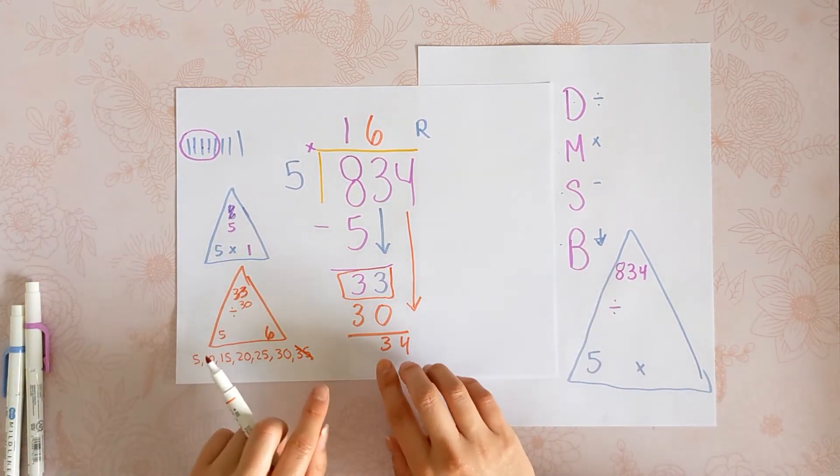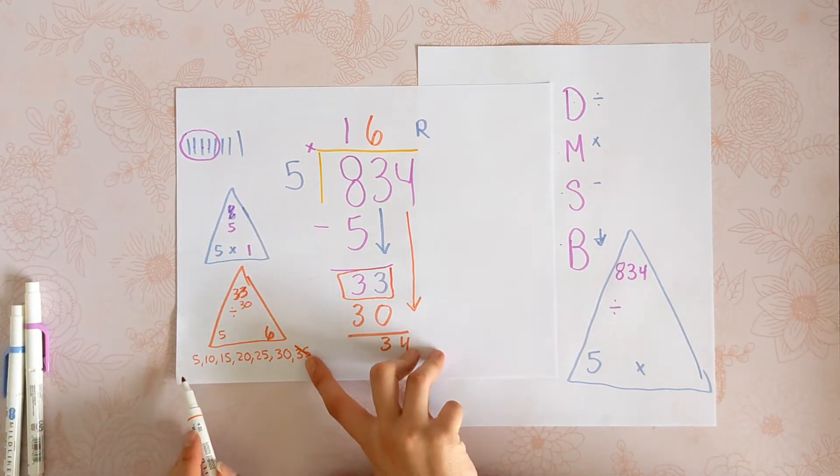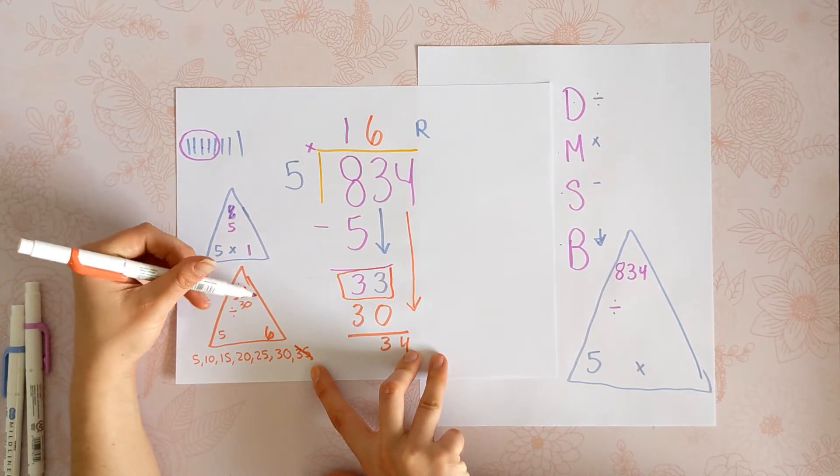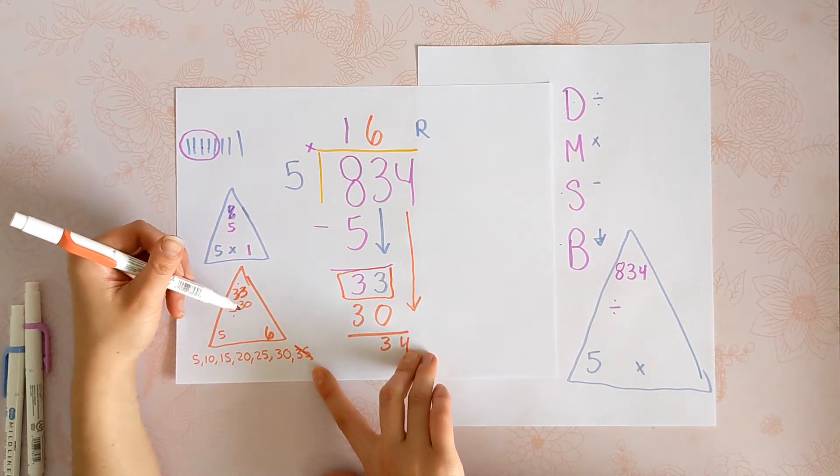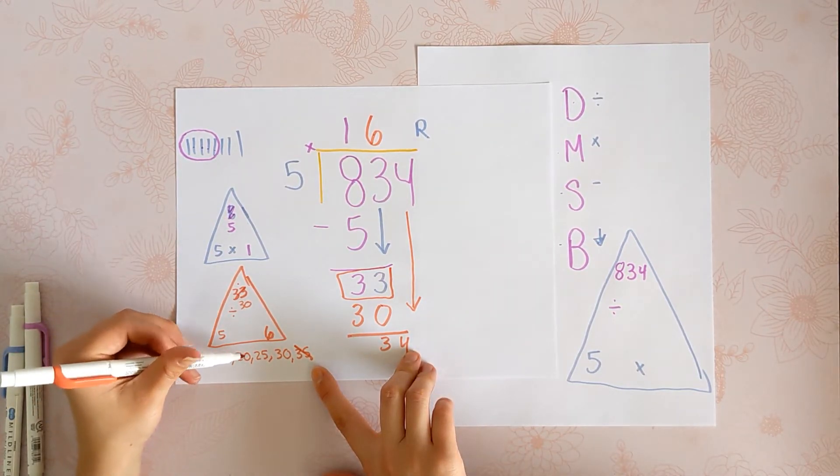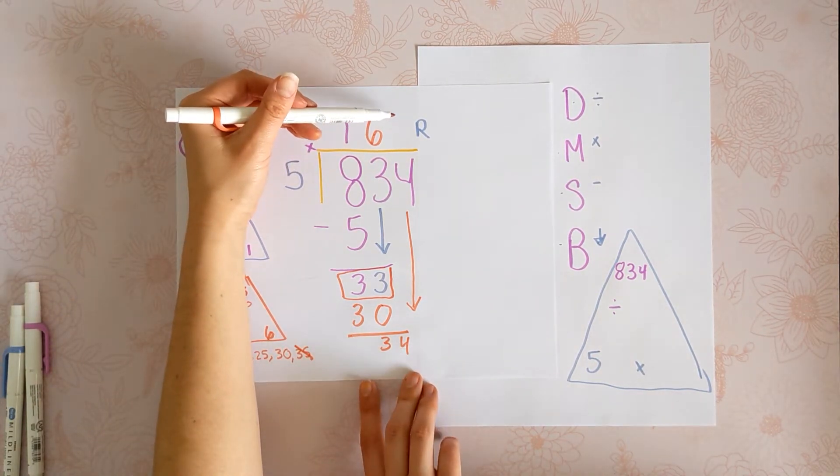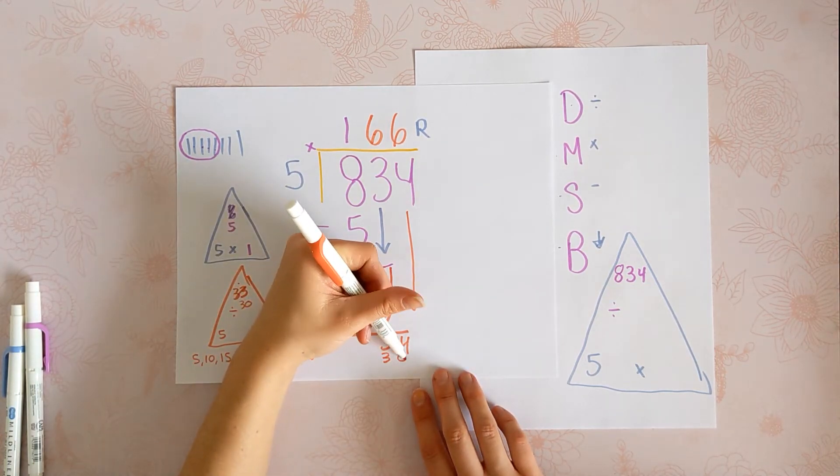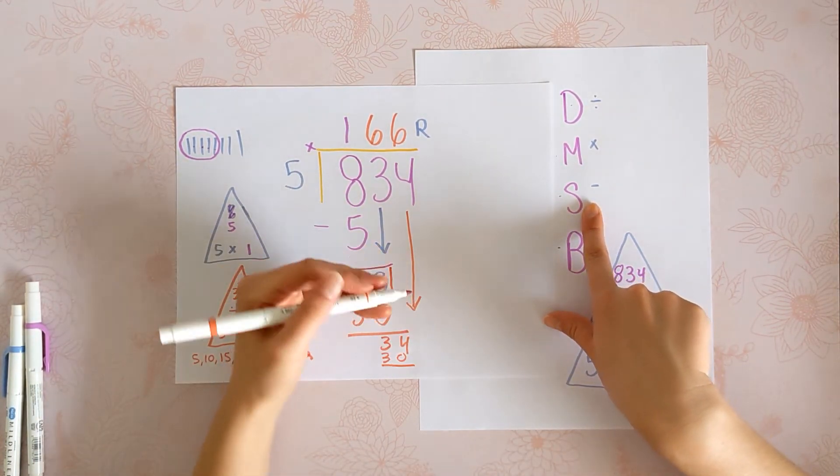Now we're going to do 34 divided by 5. We'll take a look at this. We kind of already did that. Just imagine a 34 up here. Closest you can get is 30, right? 5, 10, 15, 20, 25, 30. So we're going to do 5 times 6 again. 6 times 5 is 30. Subtract. 4.